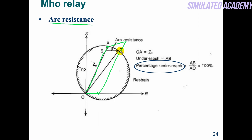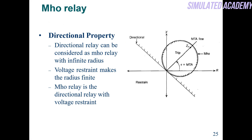In case of arc resistance — because this is a fault — this is called under-reach. The percentage under-reach is: (AB − AB this portion) divided by AO, multiplied by 100%. You will find the percentage under-reach by using this formula. So this is the Mho relay for transmission line protection.